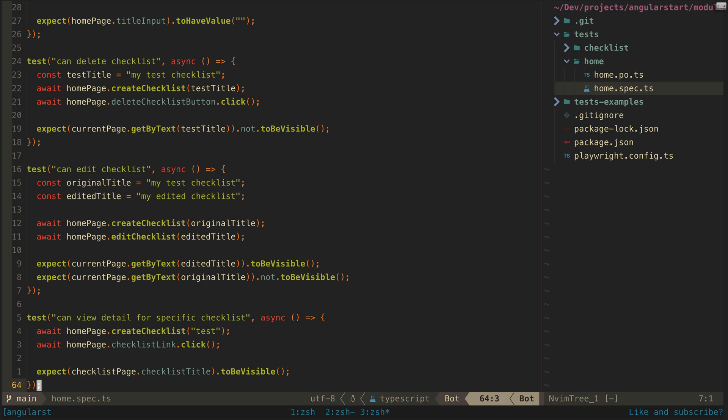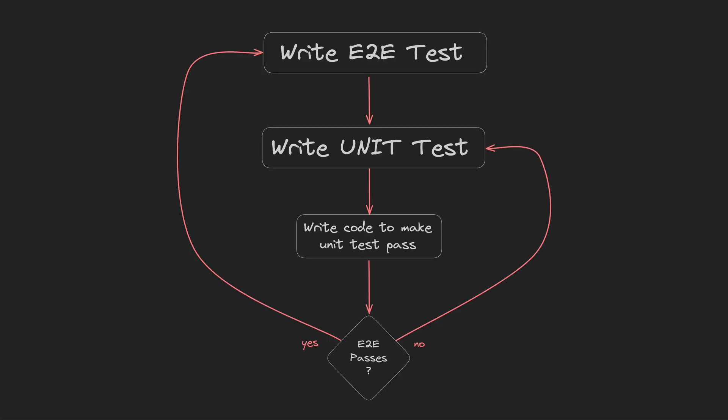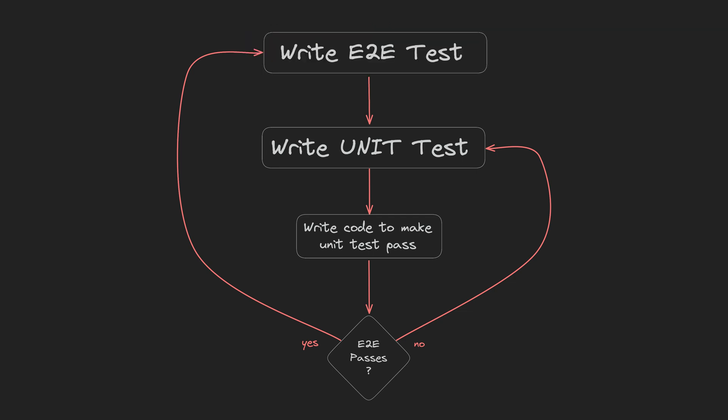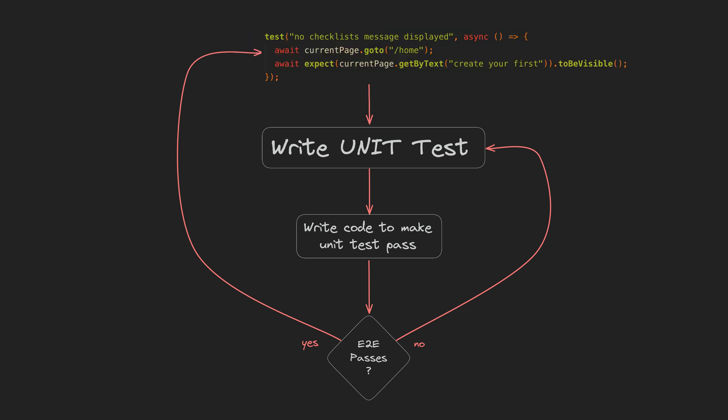Before I build anything at all I start with one of these tests. If you have a development process that involves creating user stories, you can pretty much just create an end-to-end test for each of those stories as you work on them. For the case we have been looking at in previous videos, I originally created this test. The first feature I created was simply some sort of empty message that is displayed if no checklists have been added yet.